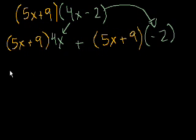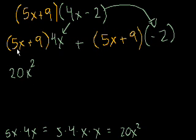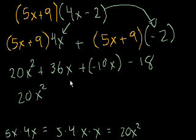5x times 4x is 20x squared. 5x times 4x is the same thing as 5 times 4 times x times x, and that equals 20x squared. So going back to the problem, 5x times 4x is 20x squared plus 9 times 4x is 36x plus minus 2 times 5x, so that's minus 10x. And then 9 times negative 2, that's minus 18. We're almost done. So we get 20x squared, and we have 36x minus 10x, so that's plus 26x minus 18.